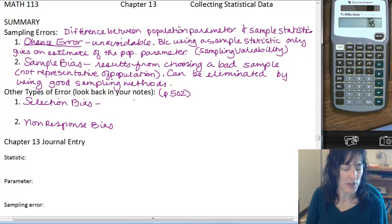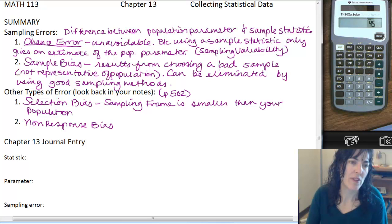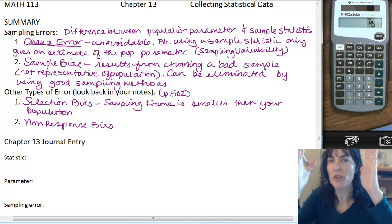So selection bias is that there's a built-in tendency to exclude a certain group from your sample. And this happens when your sampling frame is smaller than your population. When they come out to be the exact same, that your population is this large and the group that you're choosing your sample from is the exact same thing, then you're avoiding selection bias.